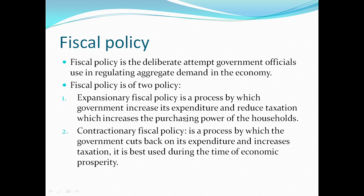Fiscal policy is of two types: expansionary fiscal policy and contractionary fiscal policy. For expansionary fiscal policy, we want to increase aggregate demand in the economy, so we increase government expenditure and reduce taxation. Taxation is the levy imposed on every household that earns an income, and it is used to fund the public welfare of the economy. A reduction in taxation increases the household's purchasing power.